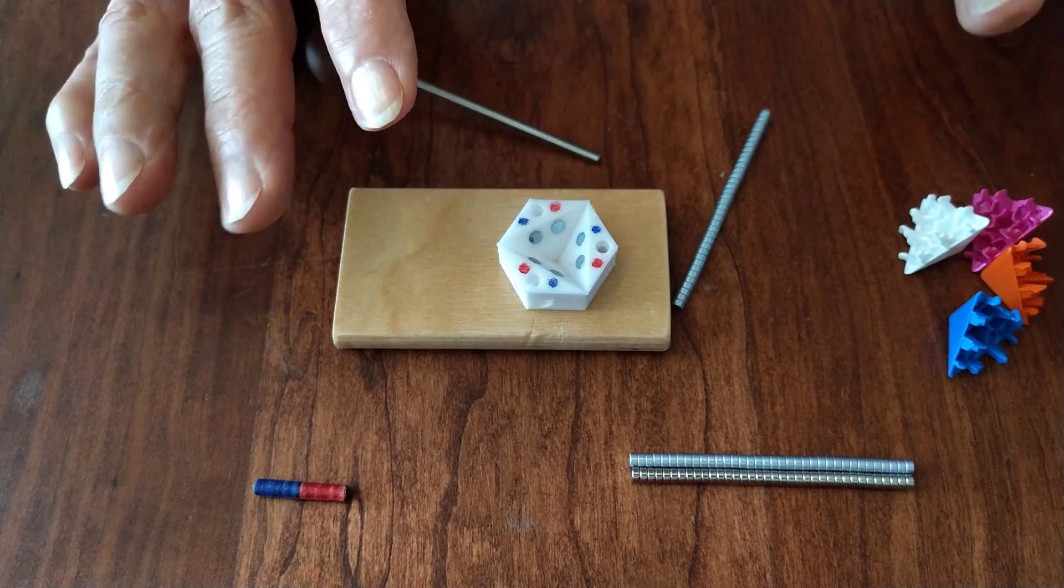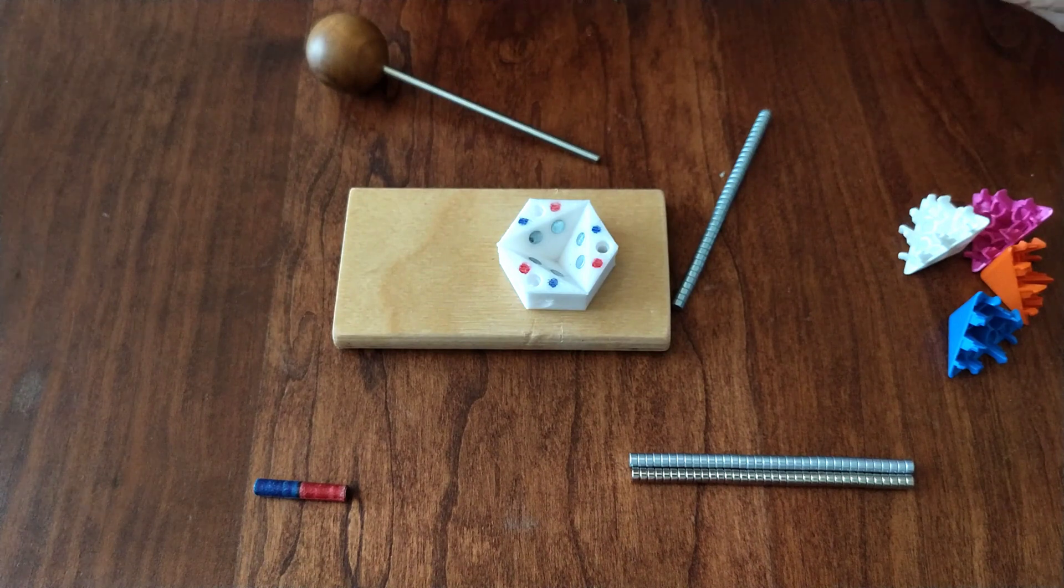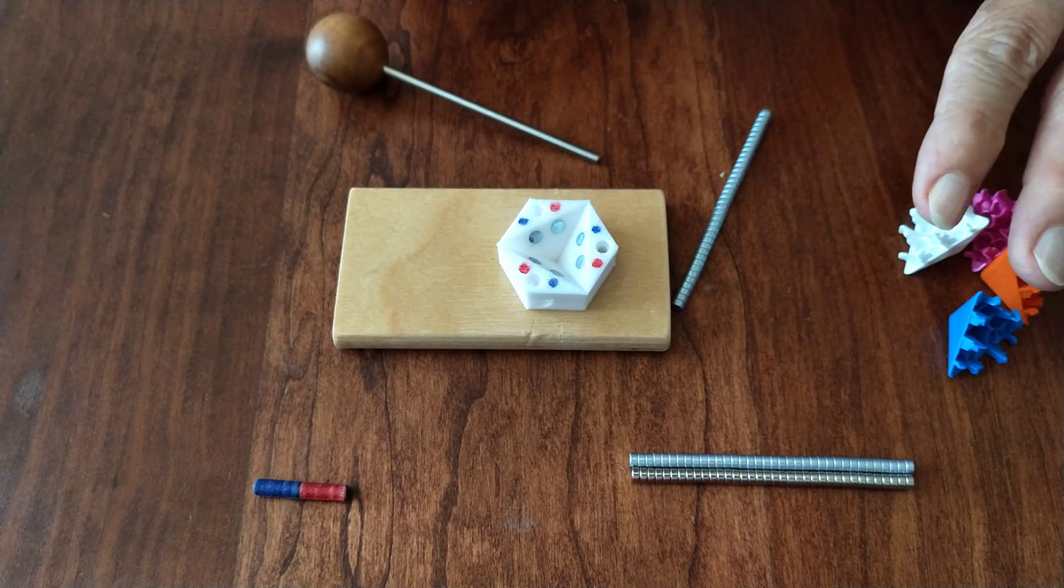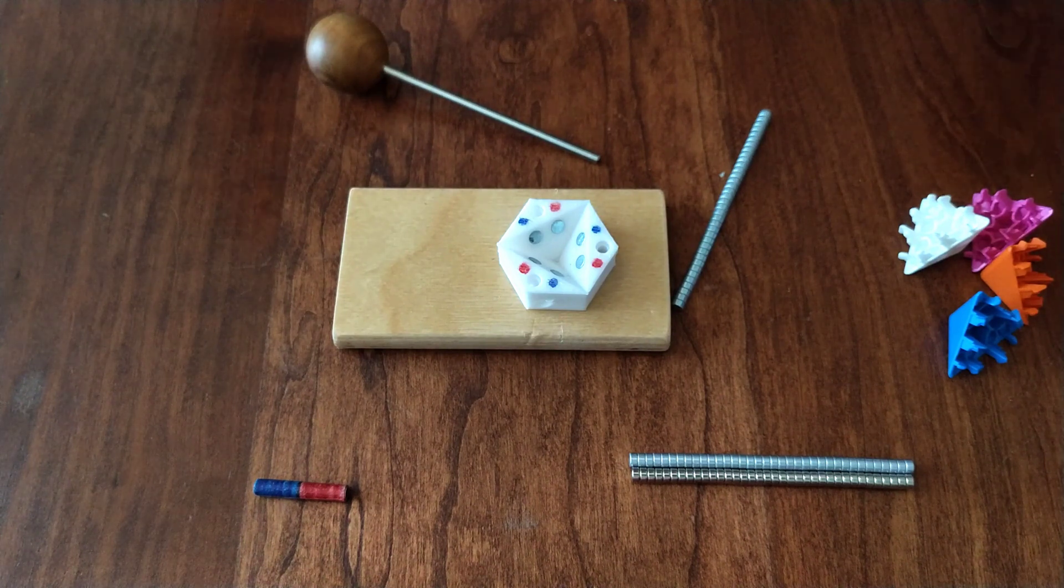Now the way it works is first we insert all the magnets into all the pieces and then we assemble all the magnetized pieces into the hypercubes. So how do we do that?